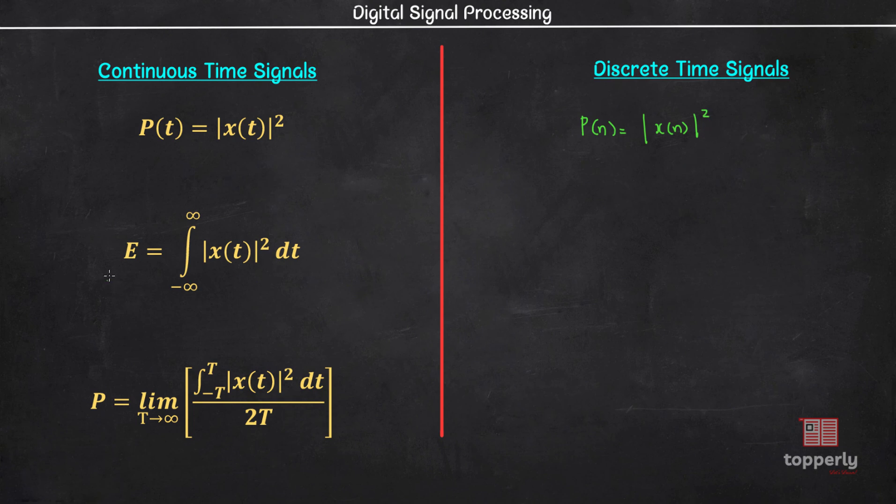We can use the same analogy for energy and power. So energy is equal to, we are replacing integral with summation, therefore sigma n equal to minus infinity to plus infinity X(n) magnitude squared. Similarly, average power P is equal to sigma n equal to minus N to plus N magnitude of X(n) squared by total time which is 2N plus 1, and this entire thing is put under limits N tends to infinity.